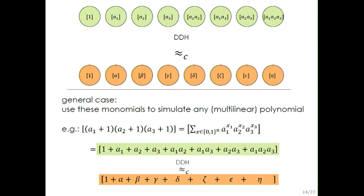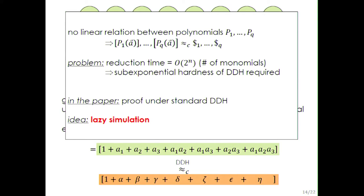So the evaluation of monomials is indistinguishable from random group elements under DDH. To prove the general case, we expand each multilinear polynomial and replace all monomials by the corresponding monomial evaluations. This is indistinguishable under DDH from the computation where everything is random, and because the polynomials queried by the adversary are linearly independent, the values are indistinguishable from truly random values.